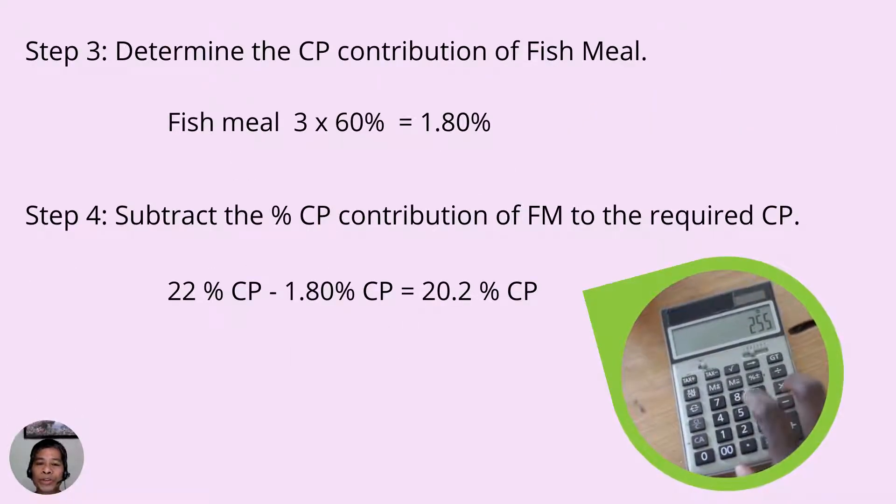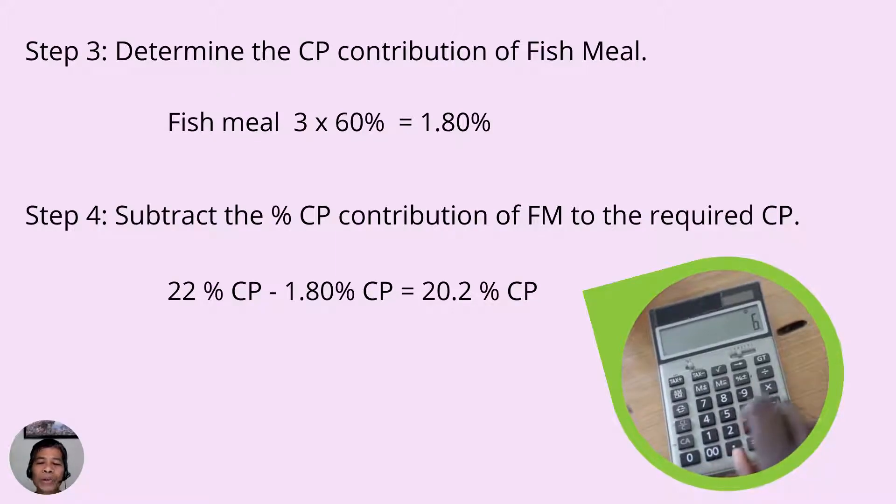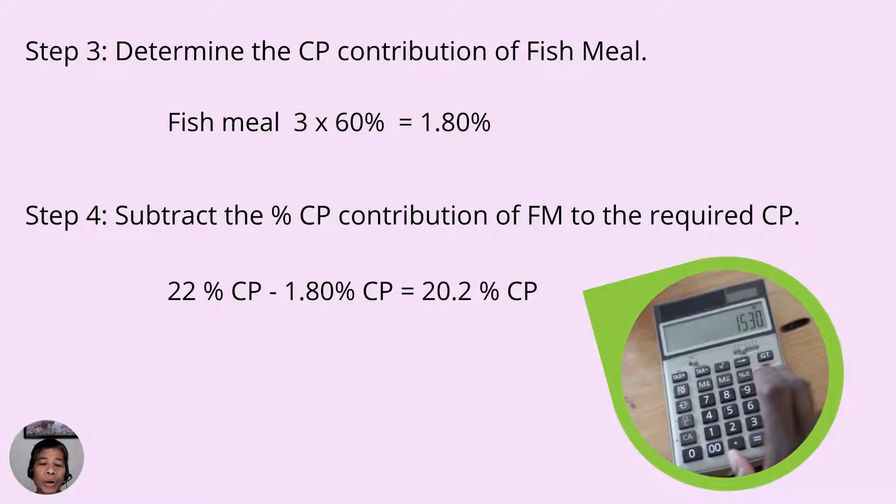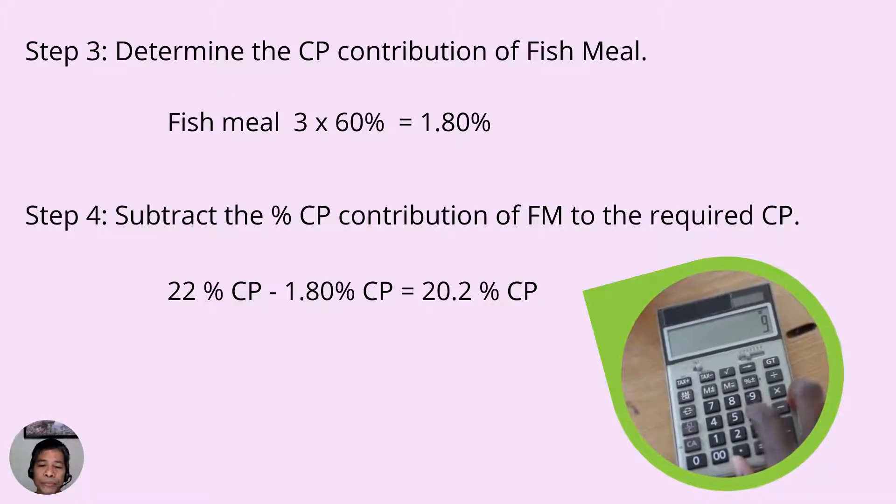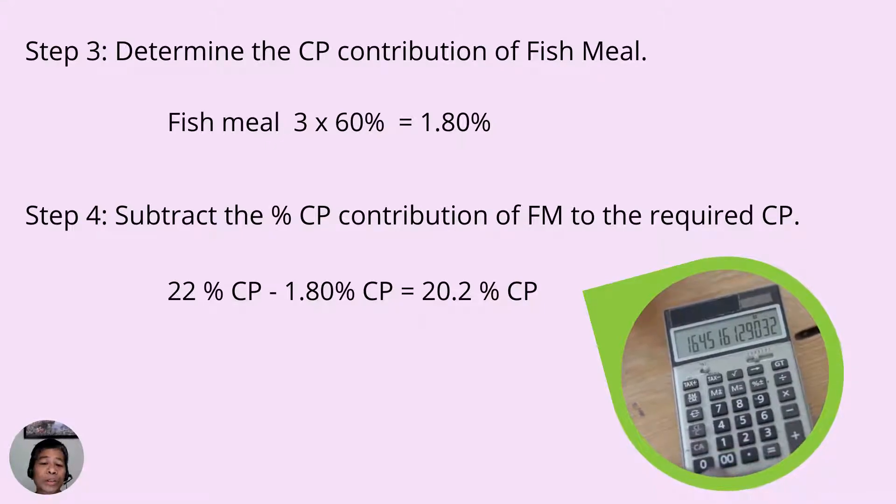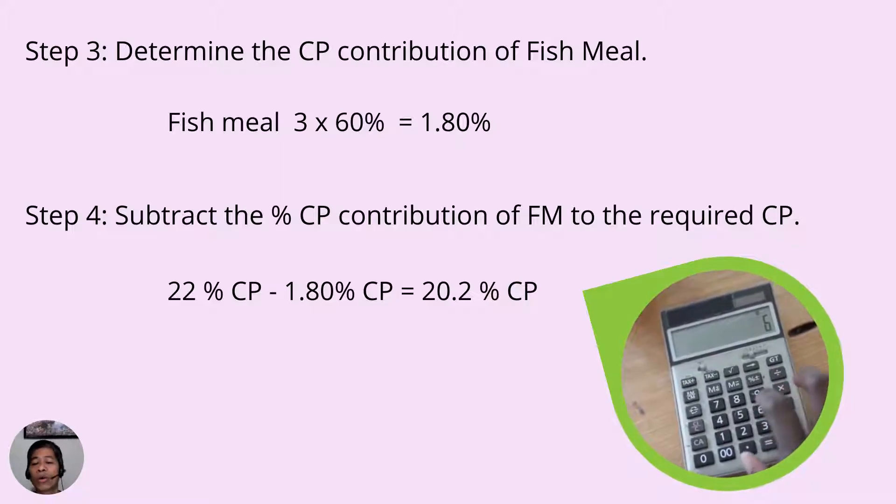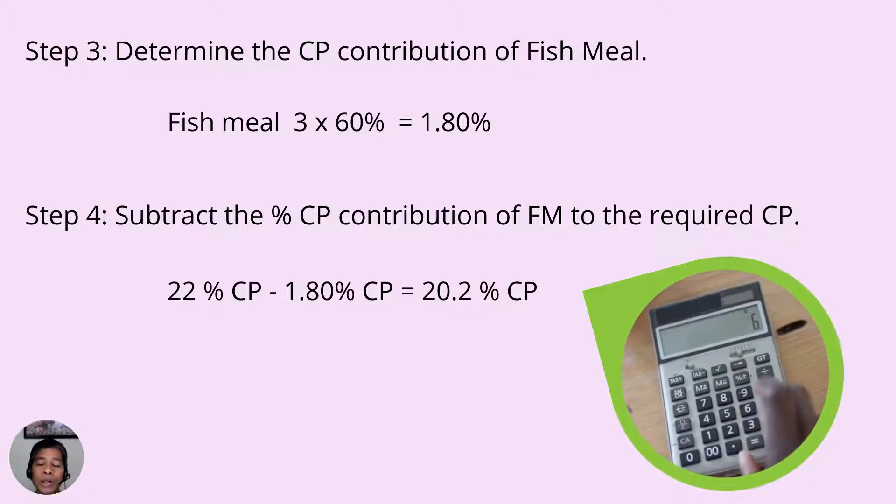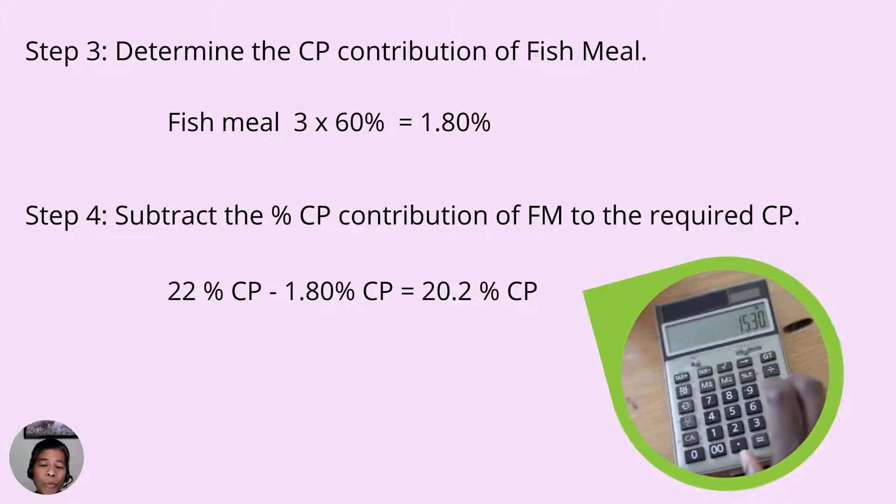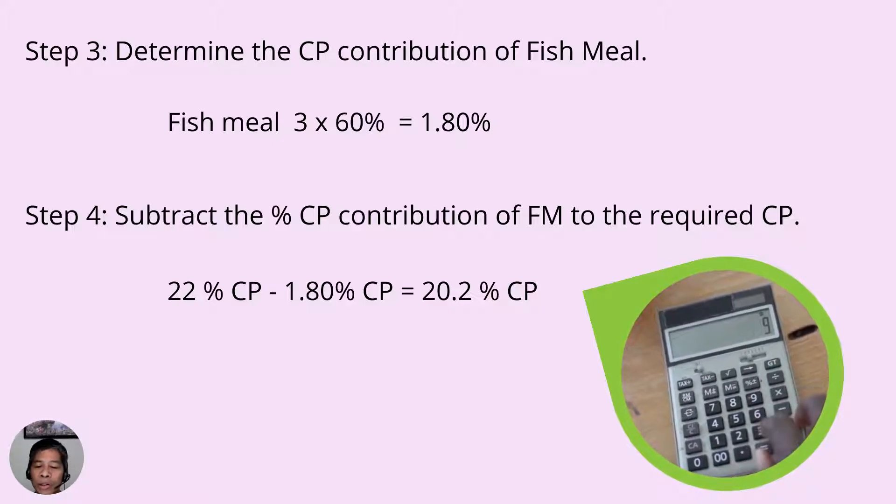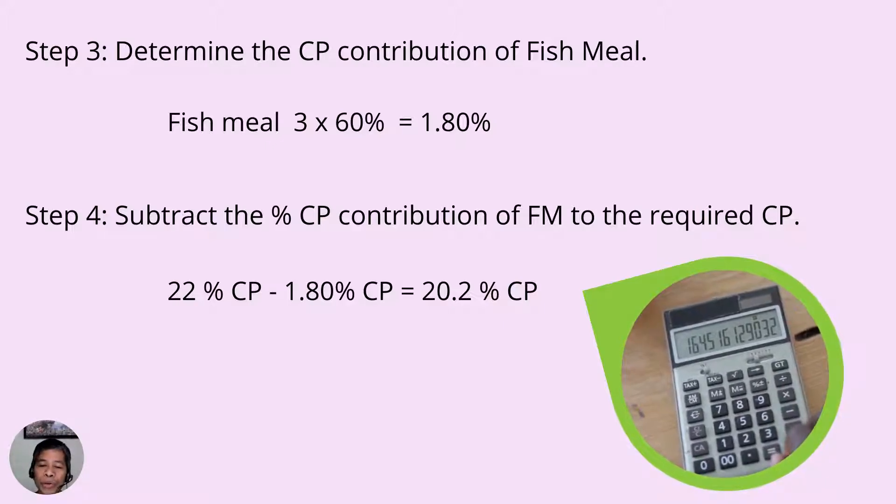For step number 3, we will now determine the CP contribution of the fixed ingredients. Since the premix, which is commonly composed of vitamins and microminerals along with other feed additives, don't have a protein component, we will only calculate the CP contribution of fish meal.